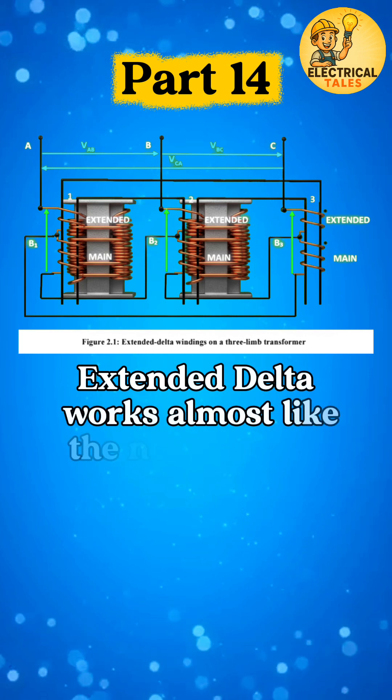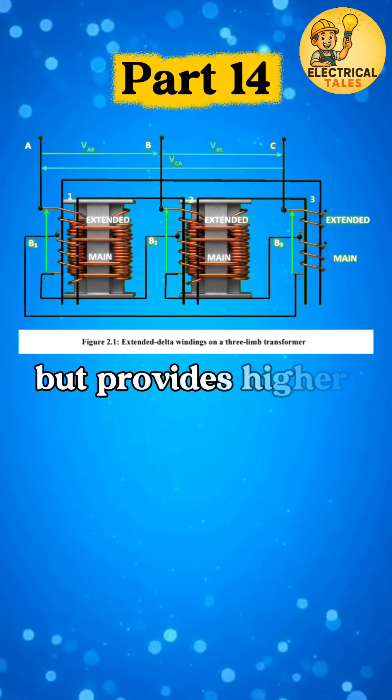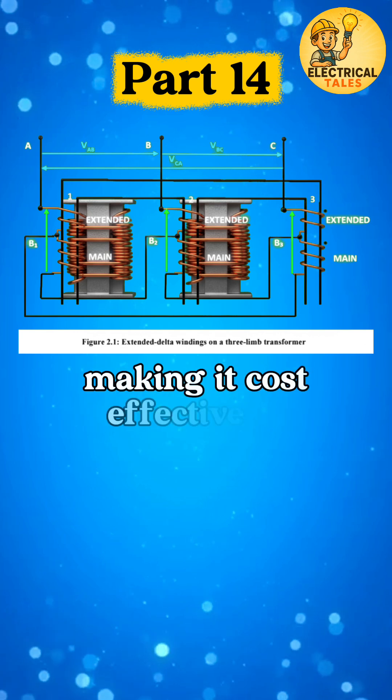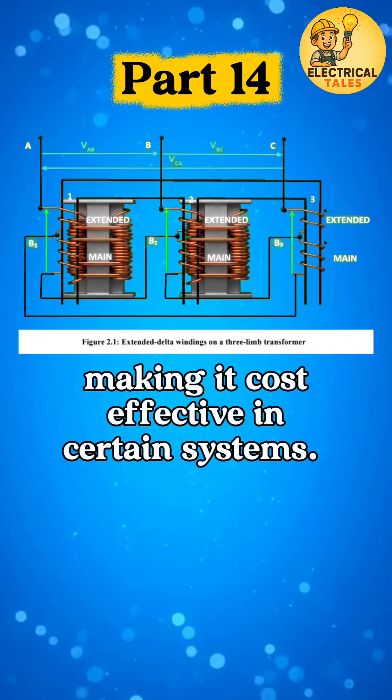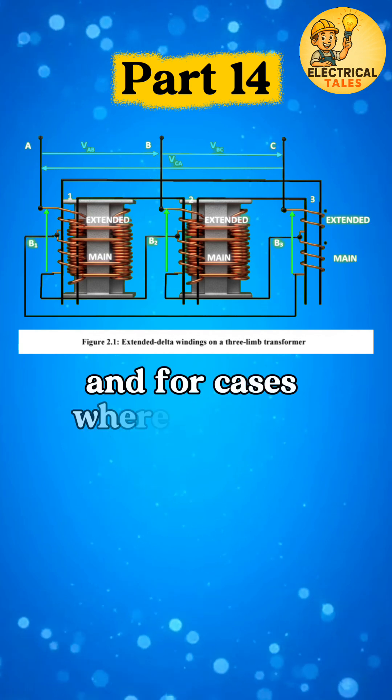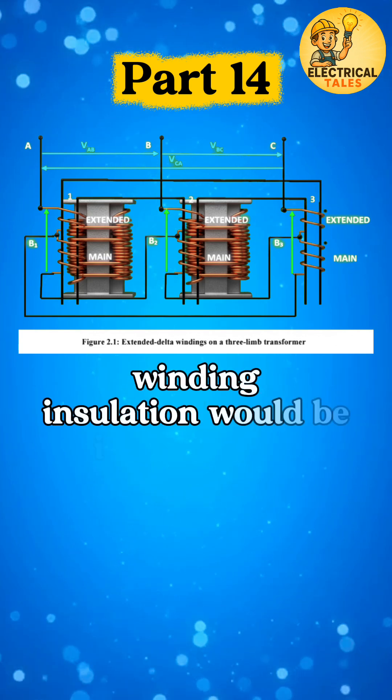Extended delta works almost like the normal delta but provides higher line voltage from the same transformer design, making it cost-effective in certain systems. It is useful for stepping up voltages in transmission and for cases where standard winding insulation would be insufficient.